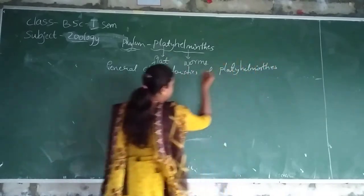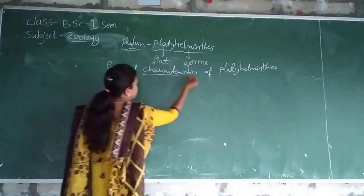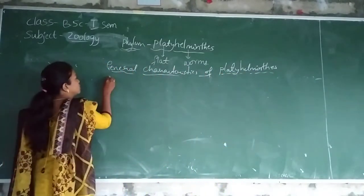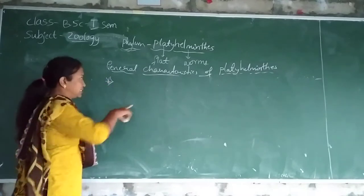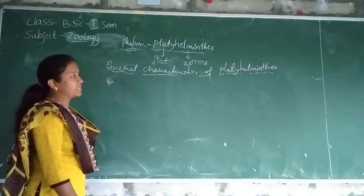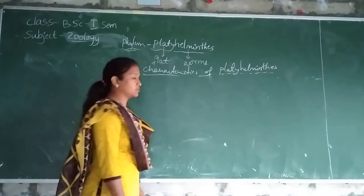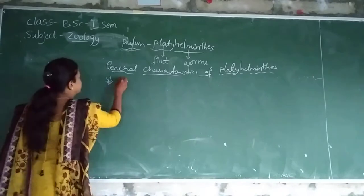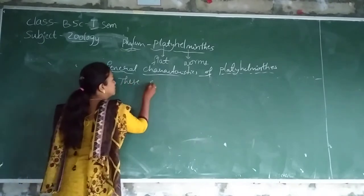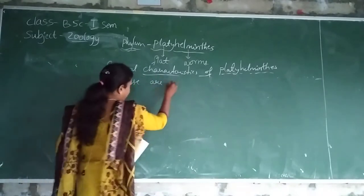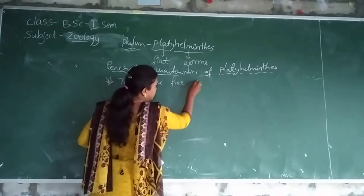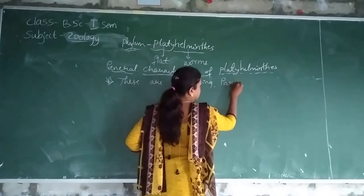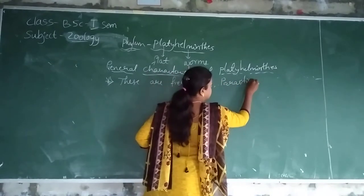So what are the general characteristics of platy elemntis? That is what we have to understand in today's class. The first general characteristic is that flat walls are included in the platy elemntis — that is the main characteristic. The next one is these are free living and parasitic animals.